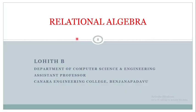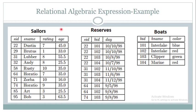Hello all. In this video we'll solve some of the problems on relational algebra. Here we have got three tables: Sailors, Reserves, and Boats. In Sailors we have four attributes: Sailor ID, Sailor Name, Rating, and Age. In Boats we have three attributes: Boat ID, Boat Name, and the color of the boat. In Reserves we have information about the sailors who have reserved the boat — that is Sailor ID, Boat ID, and the date on which the boat was reserved.